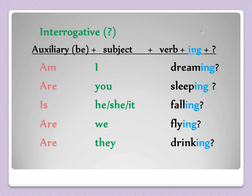The third form is the interrogative. It is just an inversion of the auxiliary with the subject. For example, in the affirmative we say 'I am dreaming' — in the interrogative: are you sleeping? is he falling? is she falling? is it falling? are we flying? are they drinking? We simply invert the subject and auxiliary to form the interrogative.